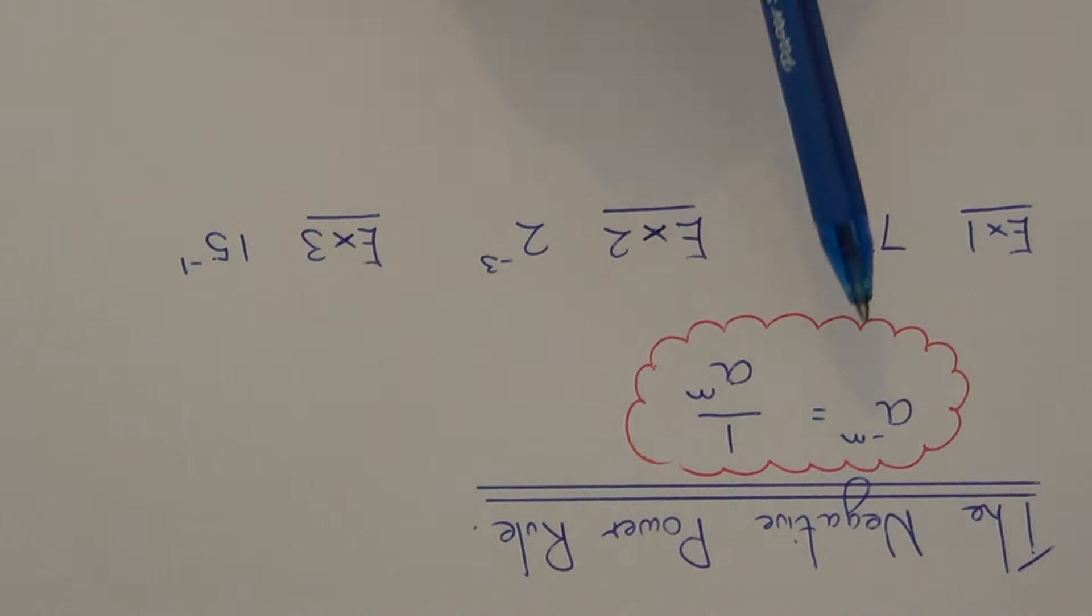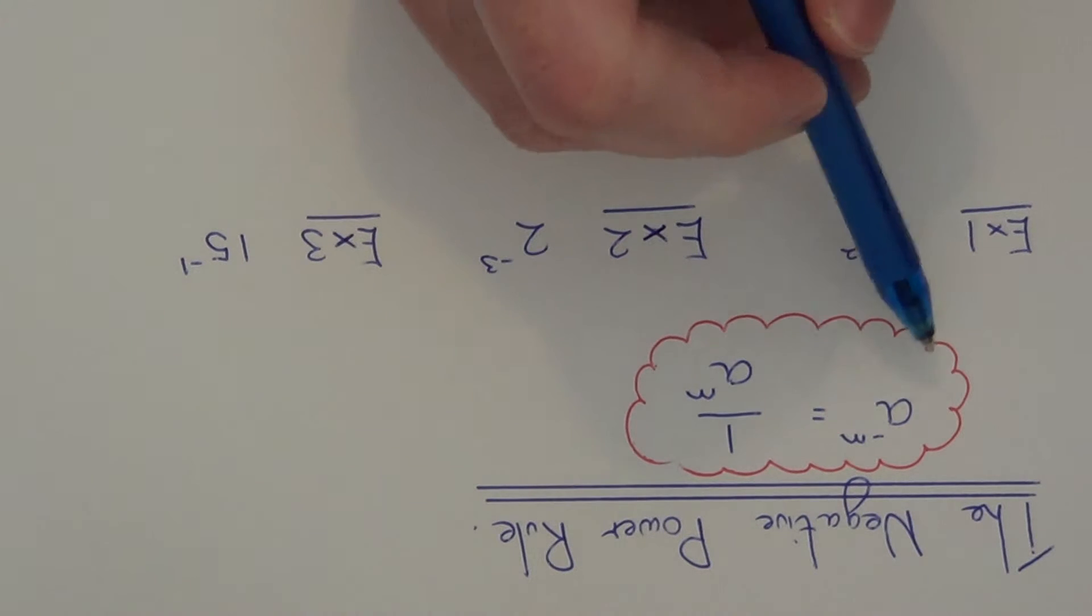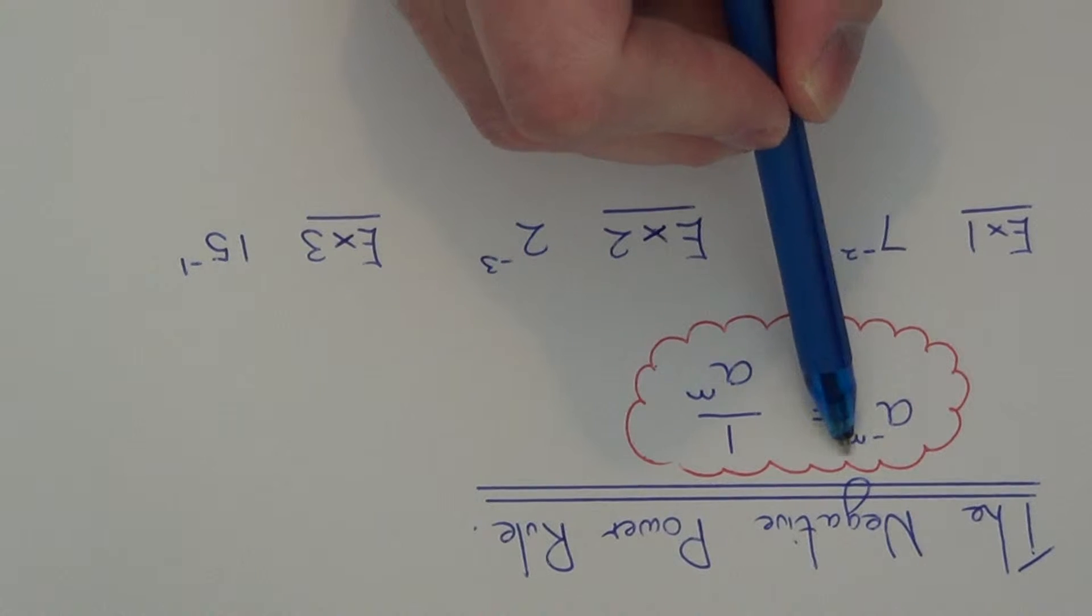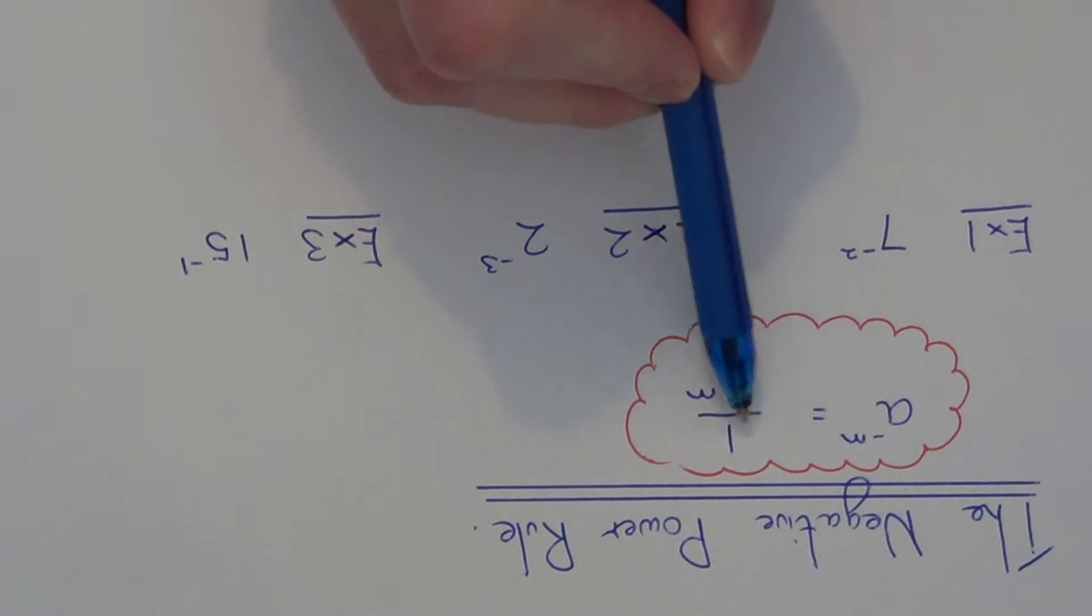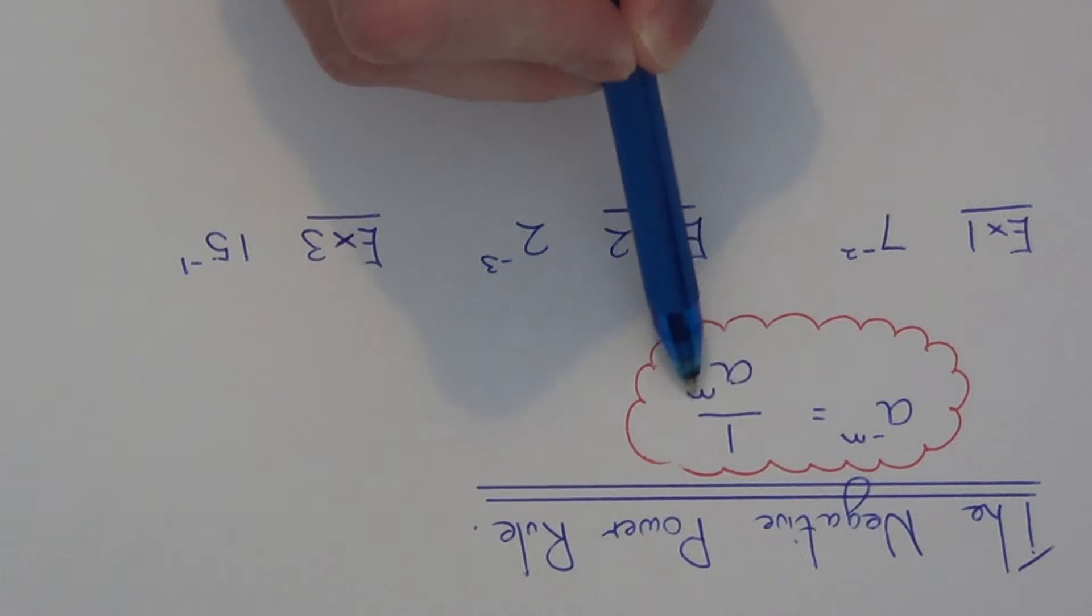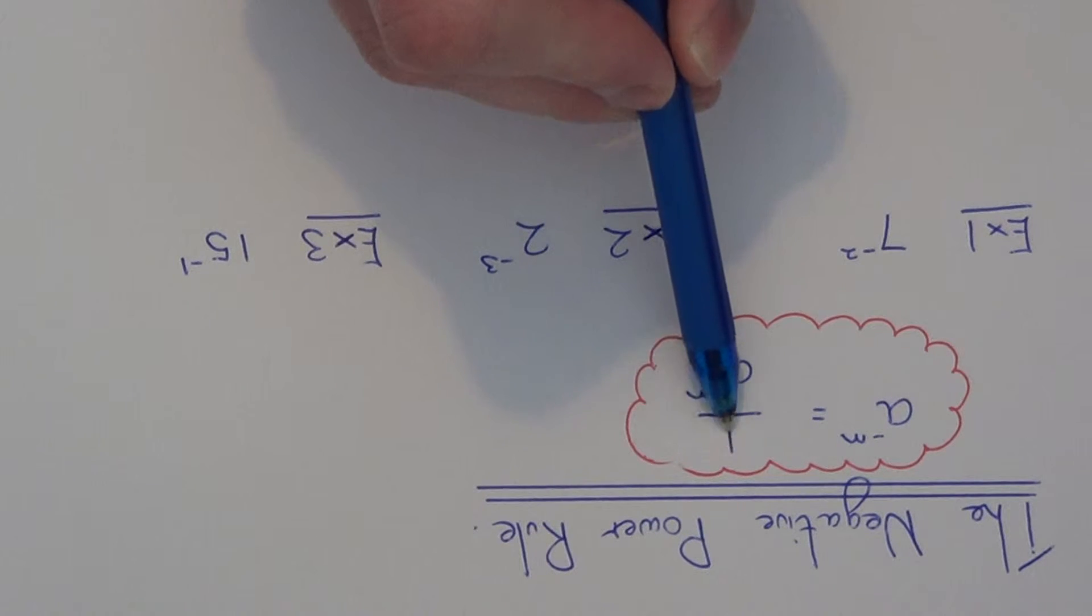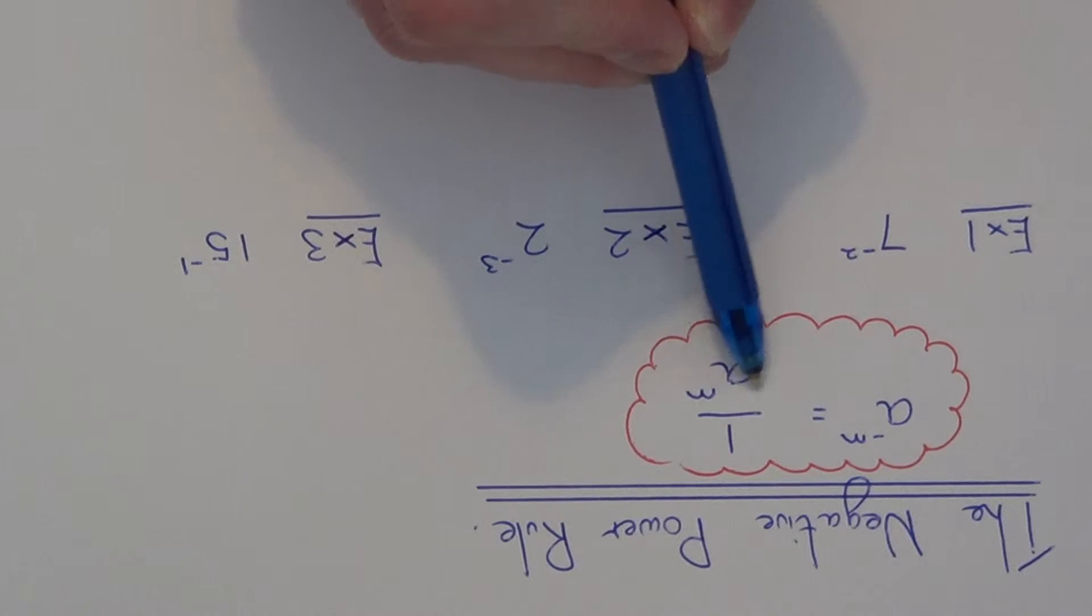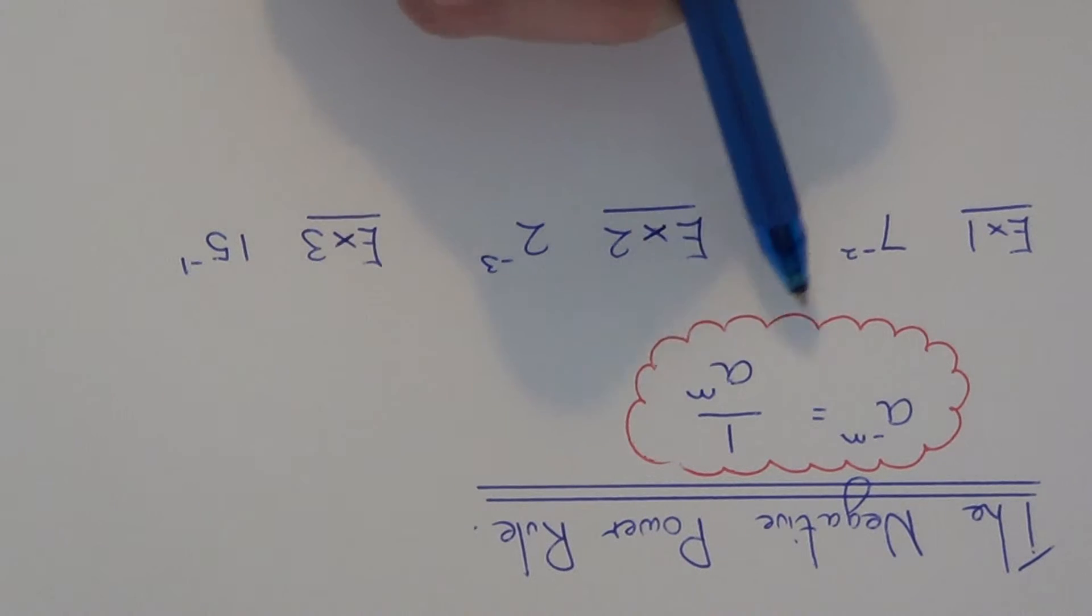Today I'm going to show you how to use the negative power rule. So when you've got a power which is negative, basically it goes to a fraction. On the top of the fraction you put number one, on the bottom of the fraction you write down A to power of M.